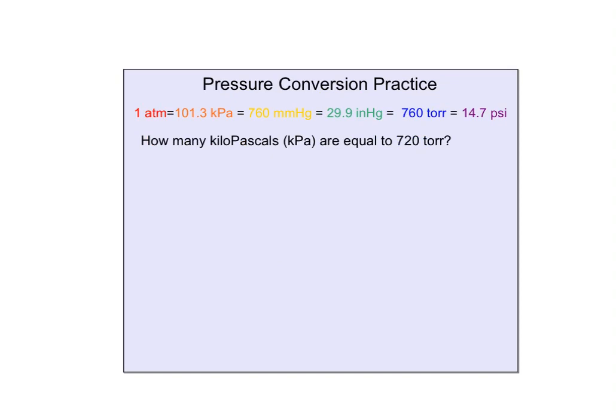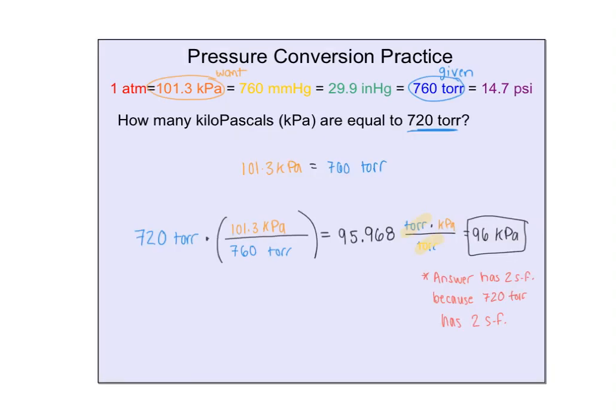I know these are new, but hopefully, if you just isolate the two things we care about, which is torr, that's our given, and then kilopascals is our want, I'd like you to pause the video and try this problem. I got 96 kPa as my answer because they wanted kilopascals. I ignored atm, I ignored mmHg, I ignored INHg, and I ignored this guy. Just the two that we care about for this problem.